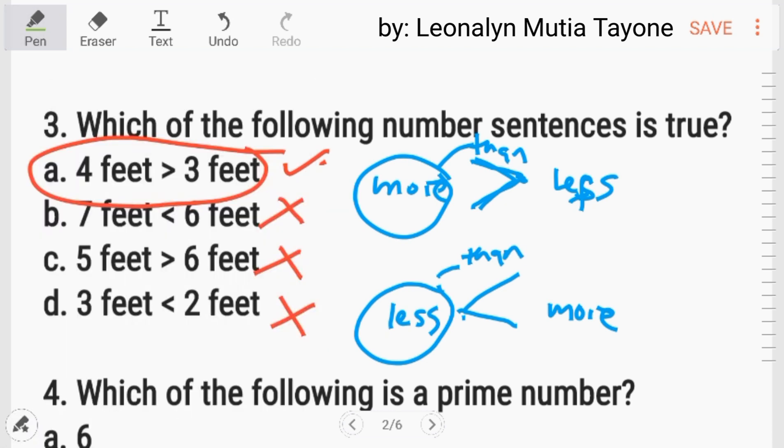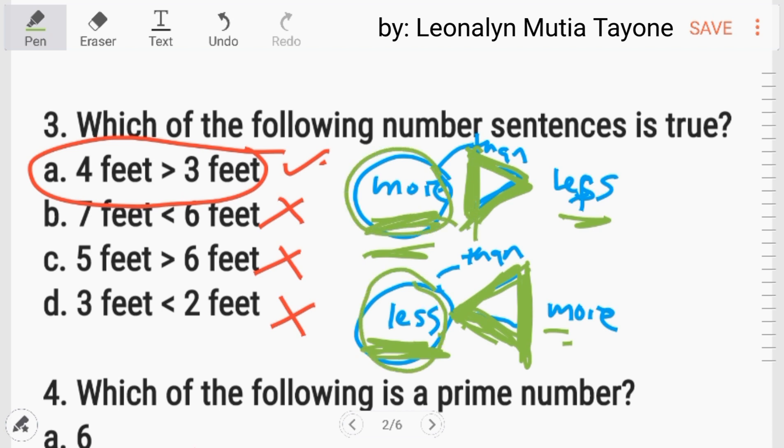Another way of remembering this sign. Ito, mas malaki. Bali, open siya. So this part, mas malaki siya. So more siya. Dito, lumiit na siya. So less siya. Ito naman, lumiit siya. So palest siya. Ito naman, malaki. More siya. So kung ang nasa left side, dito, less siya. Dito naman ay more siya. Bali, more than, less than.